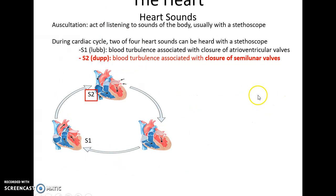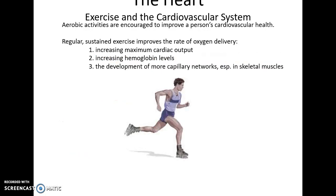The sounds of the heart include the S1 sound — the 'lub' — caused when the atrioventricular valves close, preventing blood from going back into the atria. The S2 sound — the 'dub' — occurs when the semilunar valves close, preventing blood from moving back into the ventricles. Exercise is beneficial: it increases cardiac function and output, and increases the amount of hemoglobin and capillaries in muscle tissue.